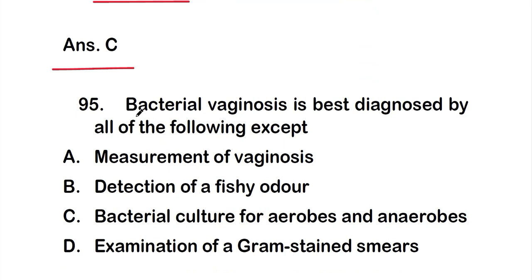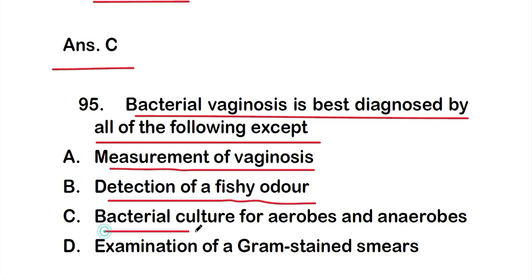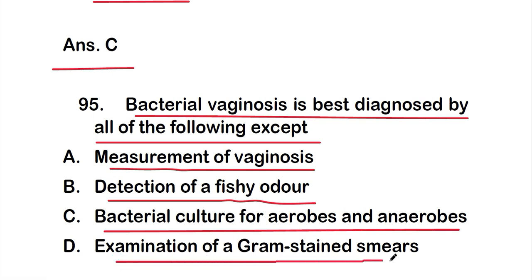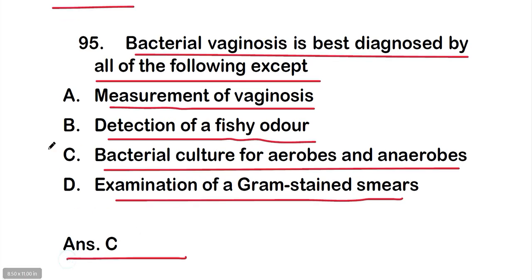Question number 95: bacterial vaginosis is best diagnosed by all of the following except option A, measurement of vaginosis; option B, detection of a fishy odor; option C, bacterial culture for aerobes and anaerobes; or option D, examination of a gram-stained smear. The right answer is option C — bacterial culture for aerobes and anaerobes is not used. Bacterial vaginosis is best diagnosed by options A, B, and D.